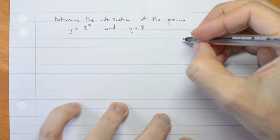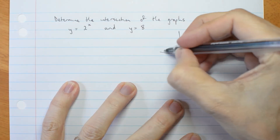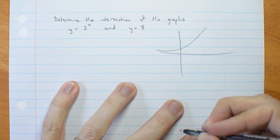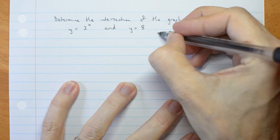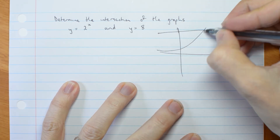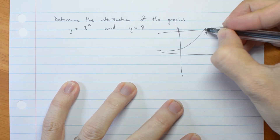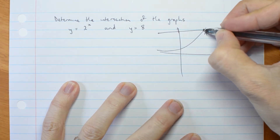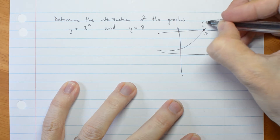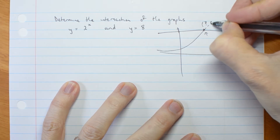If I was going to do a quick sketch, 2 to the power of x looks like this, and y equals 8 looks like this. What's the x coordinate here that gives me this intersection point? It's something comma 8.